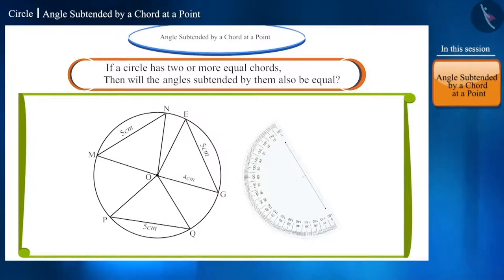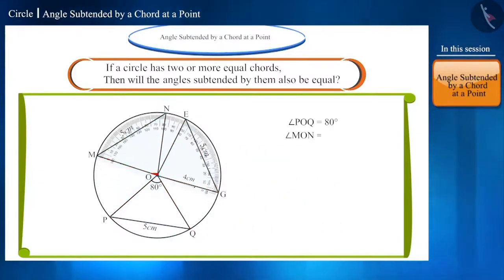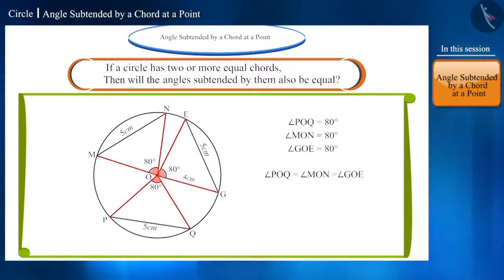Now, with the help of a protractor, find the measurement of the angles POQ, MON, and GOE subtended by the three chords at the center. You can see that all three angles are equal.